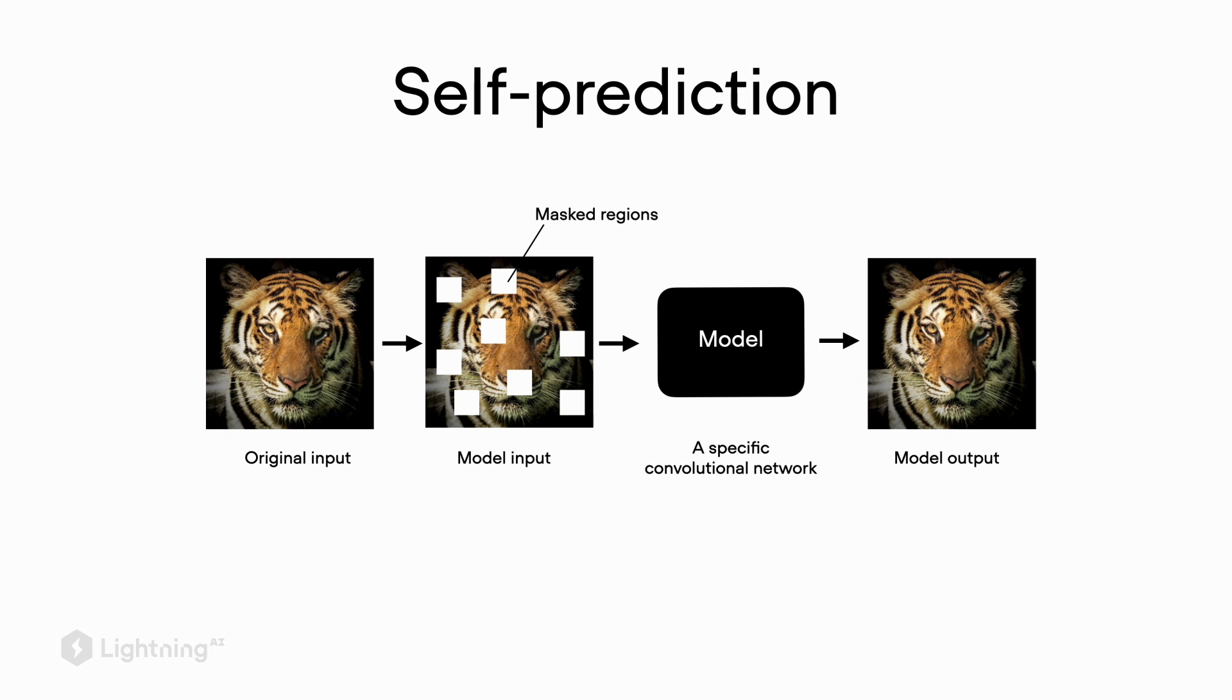By doing that, the model learns the structure of the image. It learns to understand the content of the image so that it can fill in the missing blanks. After pre-training a model using the self-prediction task, we can then transfer it to the new target task, which would be for example the image classification task, analogous to transfer learning.